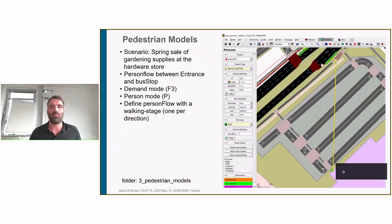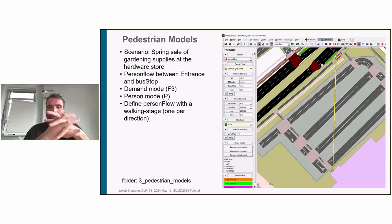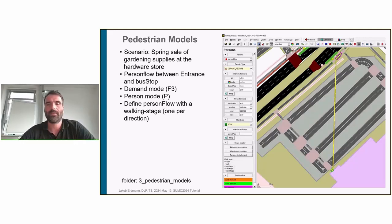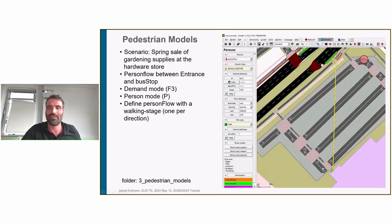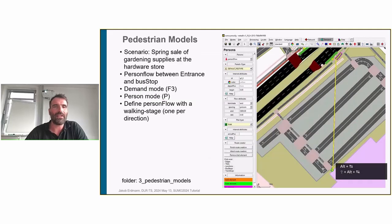Now, going to the next step: I want to show you some pedestrian models. We talked about persons walking around the network, but the question is: how do they actually walk? Sumo provides different models for walking persons. The scenario we'll look at is a spring sale at a hardware store — everybody wants to buy gardening supplies. We have a hardware store with an entrance and a big parking lot that everybody has to walk across. Being environmentally friendly, everybody takes the bus to the hardware store and then has to walk all across this parking area.